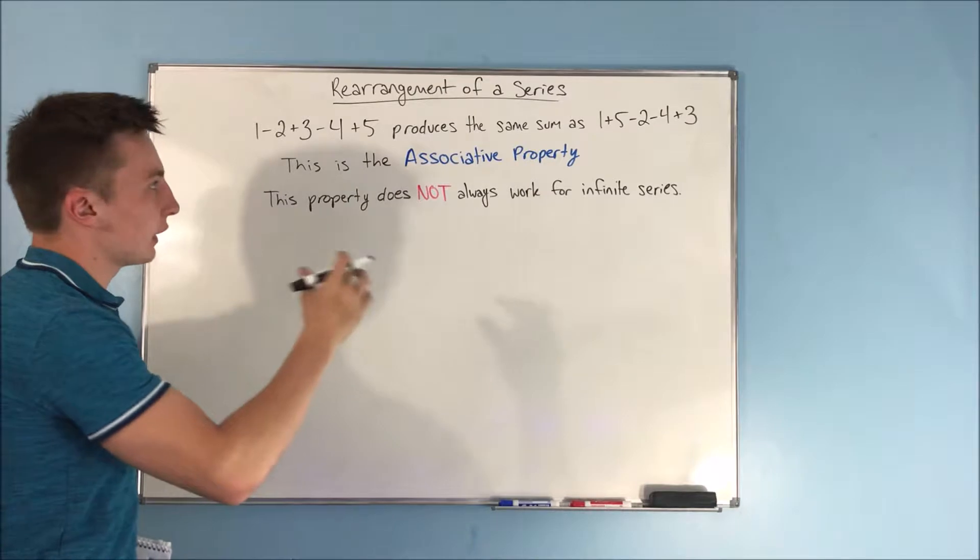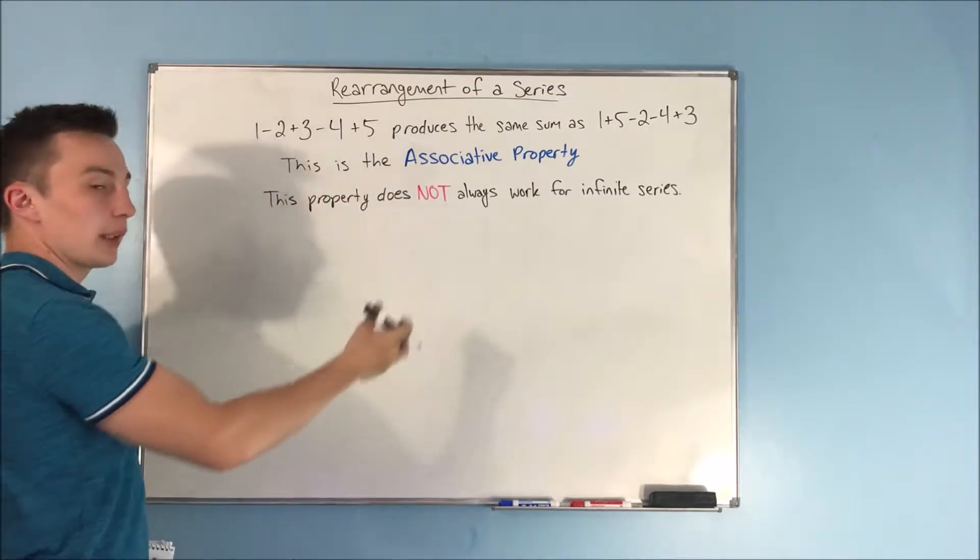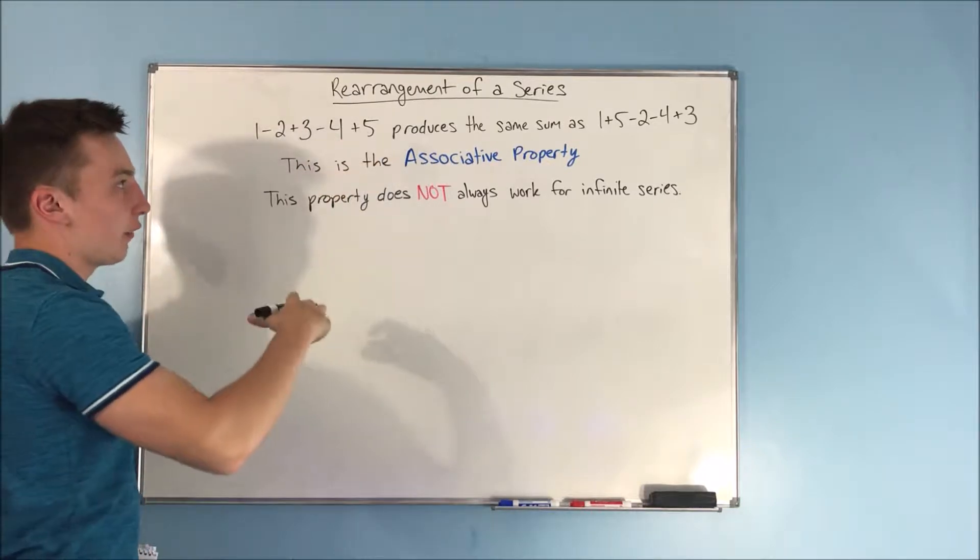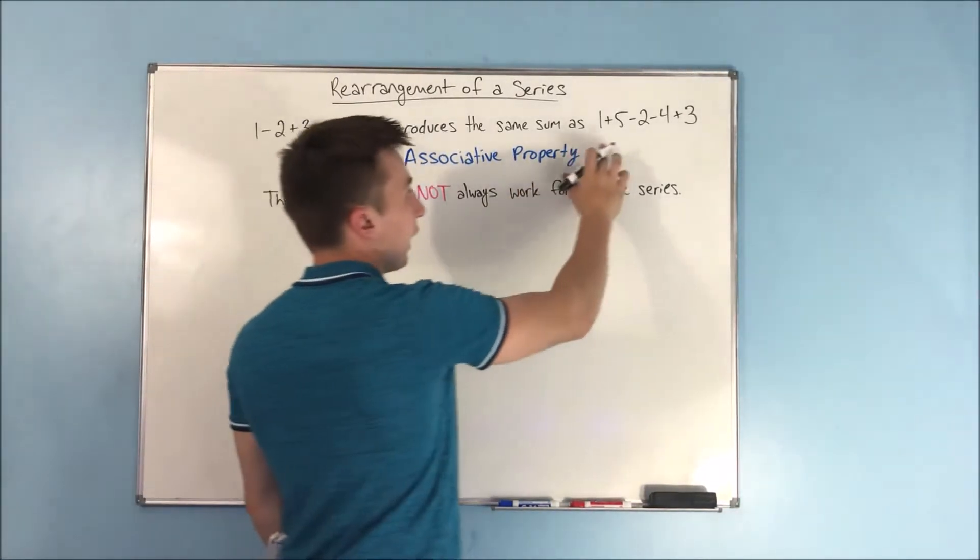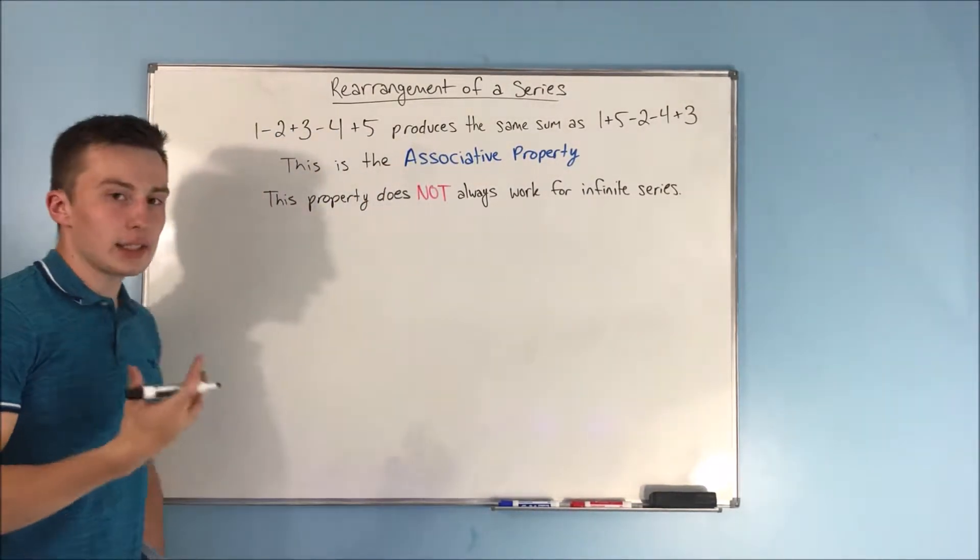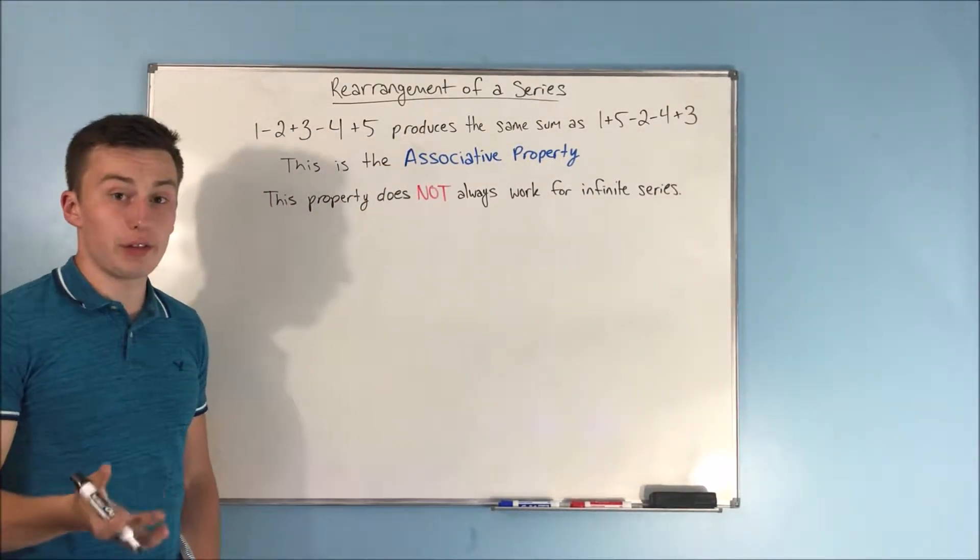Basically what it's saying is it kind of starts off with something that you already know. 1 minus 2 plus 3 minus 4 plus 5 produces the same sum as 1 plus 5 minus 2 minus 4 plus 3. That's the associative property. You've known that for a very long time.